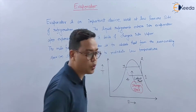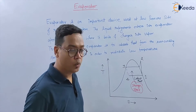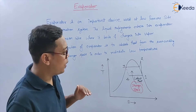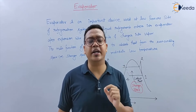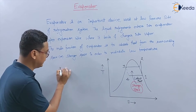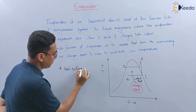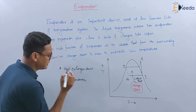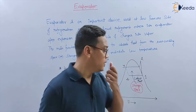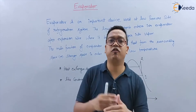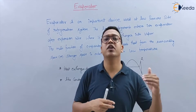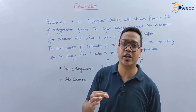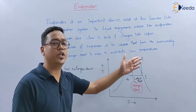The refrigerant converts from liquid to vapor using latent heat. One more thing to remember: the evaporator is also a heat exchanger device, like the condenser. In this evaporator there is an arrangement of coils. The evaporator is also a heat exchanger because it is taking heat from the storage space and transferring that heat to the refrigerant.